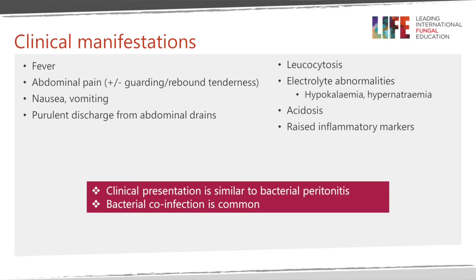The clinical manifestations of intra-abdominal candidiasis include fever and abdominal pain, which can be associated with guarding or rebound tenderness — peritoneal signs — as well as nausea or vomiting. Discharge from drains may be present, and purulence should raise suspicion for infection. Laboratory abnormalities include leukocytosis with left shift, electrolyte abnormalities, acidosis, and elevated inflammatory markers. The clinical presentation is similar to bacterial peritonitis.